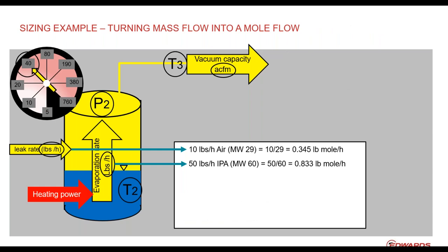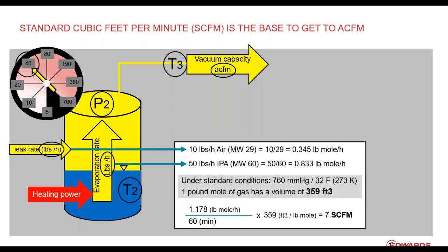Let's go directly to how sizing would work. From the HEI diagram, I assumed a 1,000 cubic foot reactor, landing at 10 pounds per hour of air as the leak rate. I'm also assuming enough heating power to generate an evaporation rate of isopropanol at 40 Torr of 50 pounds per hour. So this reactor delivers mass flow in pounds per hour. All we need to do is apply the mole weights: air has a mole weight of 29, isopropanol has a mole weight of 60. Divide the mass flow by the mole weight to get a mole flow — this is the bridge from mass flow to volume flow.